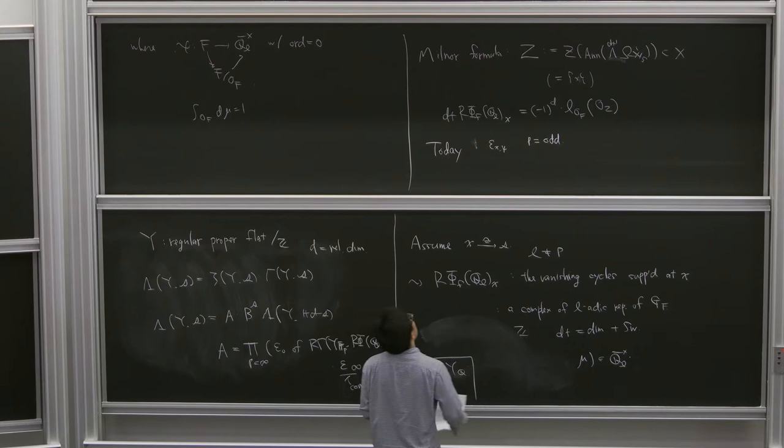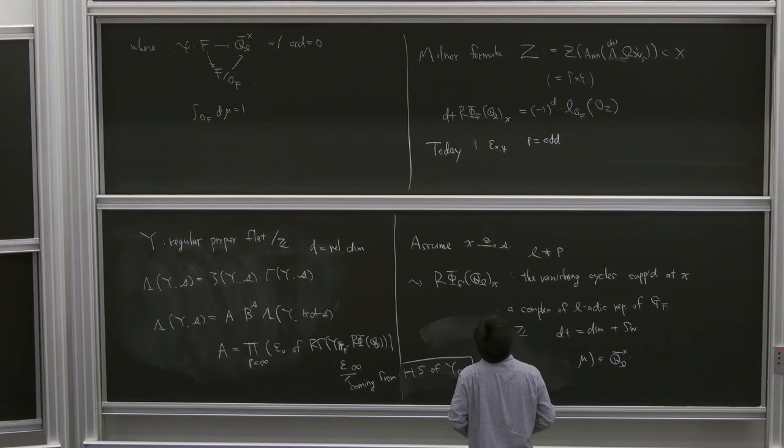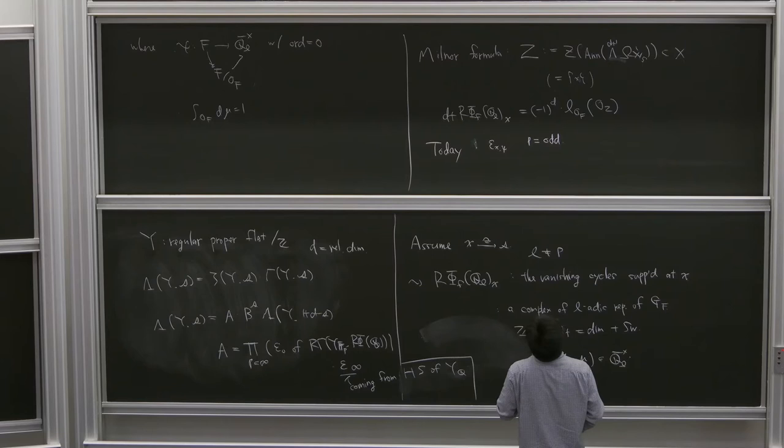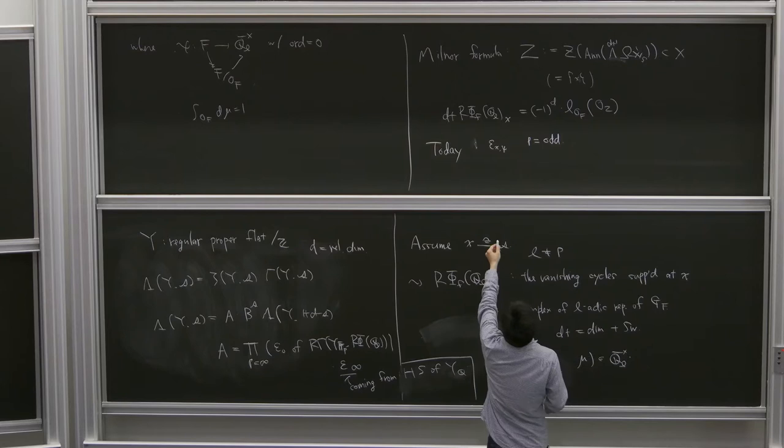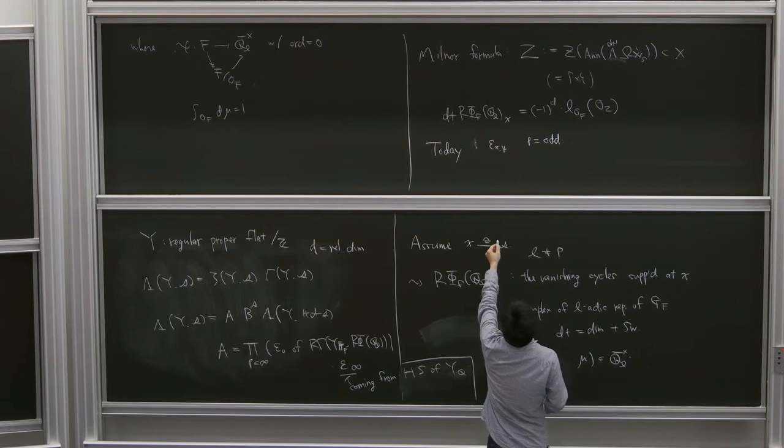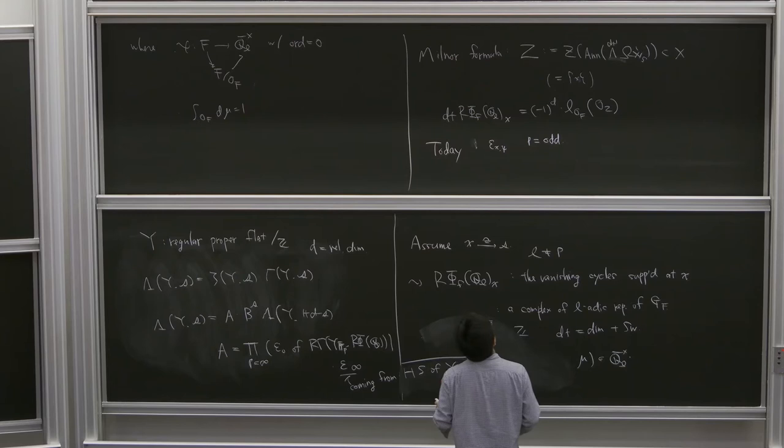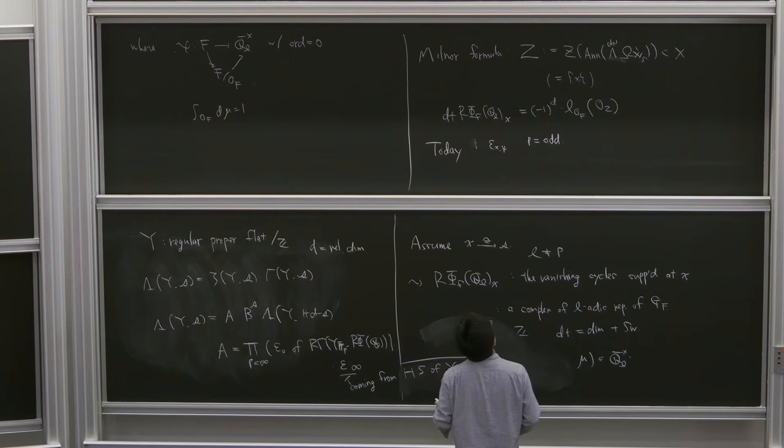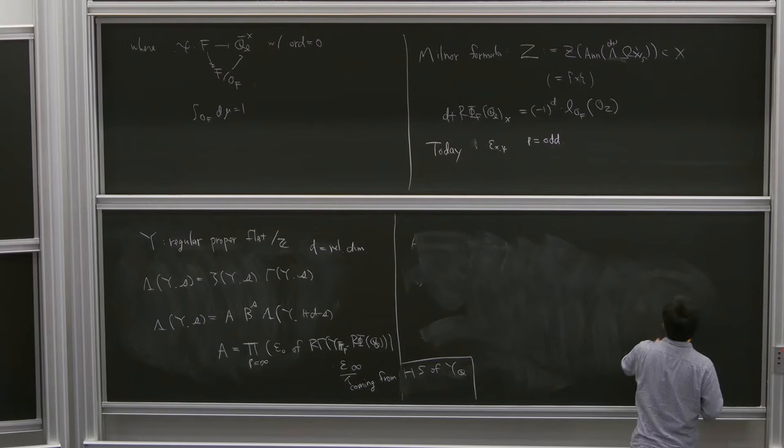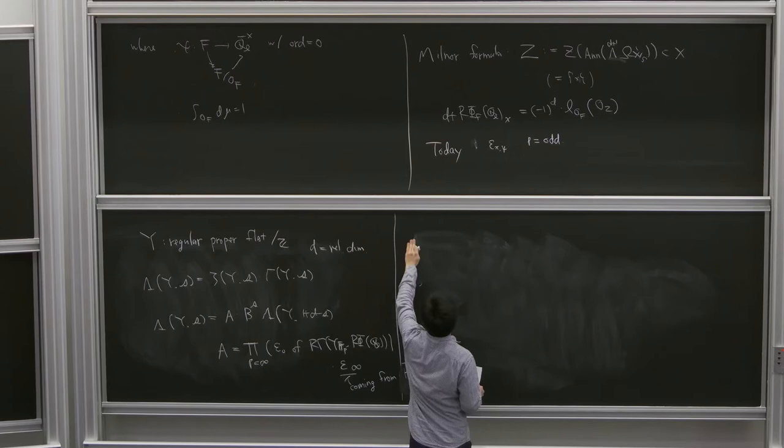In this way, this local epsilon factor naturally appears, and today I'd like to investigate some relation between this local epsilon factor and the degeneration of the geometry. So more precisely, I construct some quadratic form on some invertible OZ module.